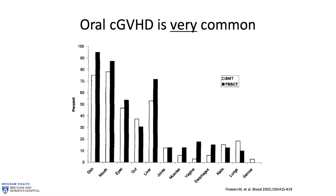This is a really nice figure that works for a group like you, a group of dentists, or a group of physicians. This is data from nearly 20 years ago from Seattle, from the Fred Hutch Cancer Research Center. It looks at the various areas of involvement in the body in patients with chronic graft-versus-host disease. You can see that skin and mouth are the two most frequent, approaching anywhere from 70% to 90% of patients who develop any form of chronic GVHD. So it's very common for the mouth to be affected.